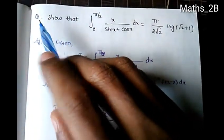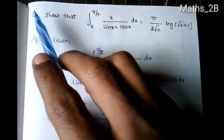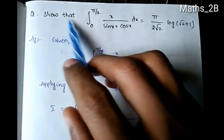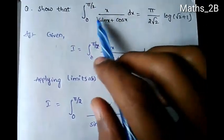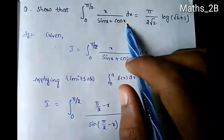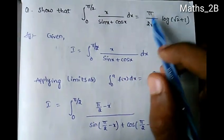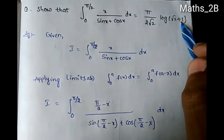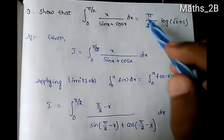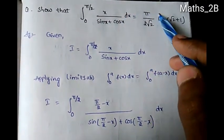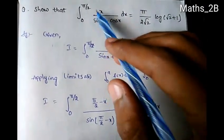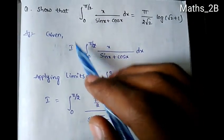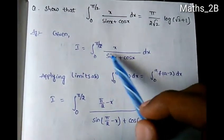Hi friends, in this next topic on definite integration, we need to show that the integration from 0 to π of |sin x + cos x| dx equals 2√2 · log(√2 + 1).